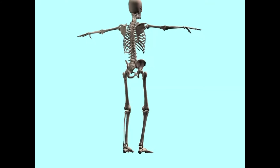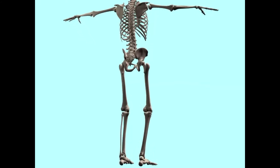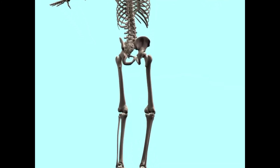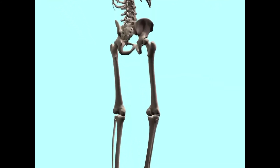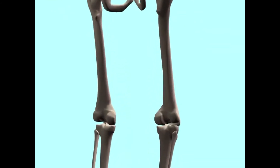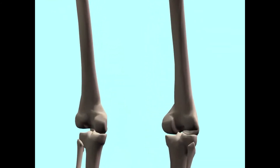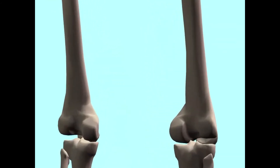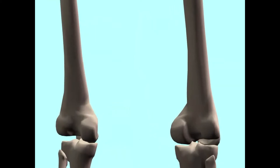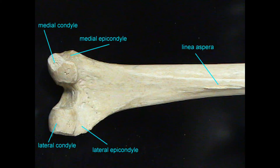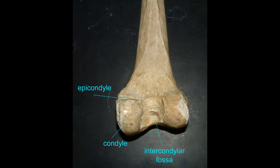At the distal end of the femur, the bone expands to form the medial and lateral epicondyles. The knobs known as the medial and lateral condyles articulate with the medial and lateral condyles of the tibia. They face posteriorly.